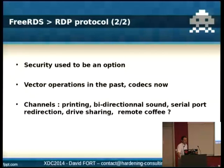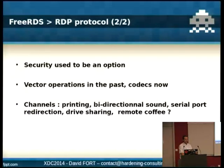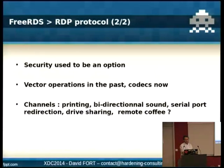In RDP, security used to be an option. At the beginning there was no security at all. Then they introduced RDP4 security, which is a kind of joke because it was very weak. You had that concept of a public-private key, but the private key was actually published in the specification, so you could do man-in-the-middle attacks very easily. In the protocol you used to have many vector operations in the past, and now it's only codecs — it's really just a matter of finding the right codec to encode a raw bitmap.